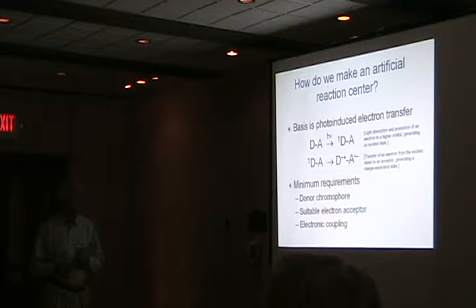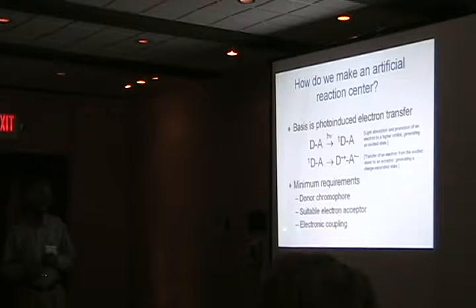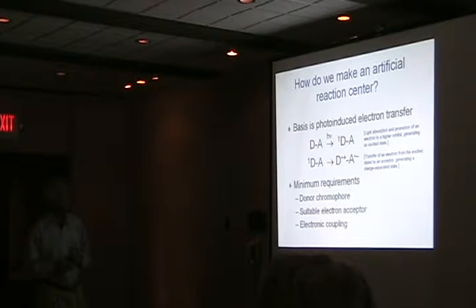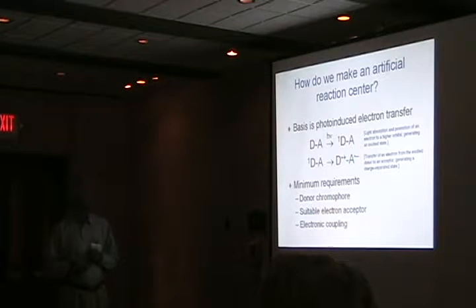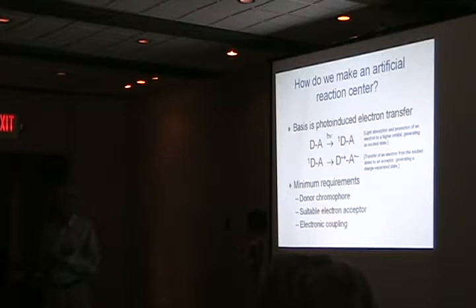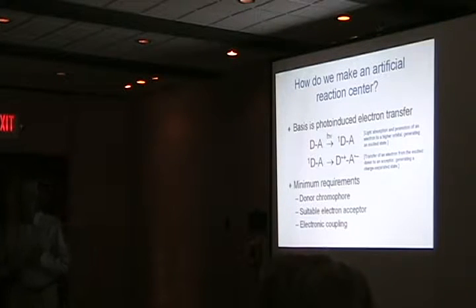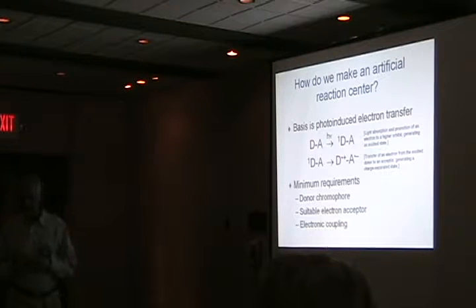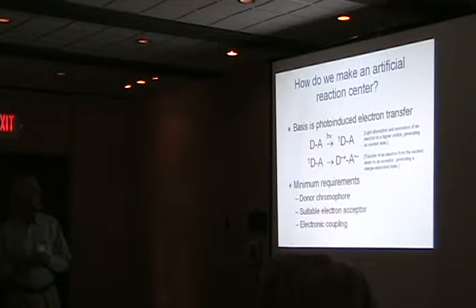The minimum requirements are going to be some kind of a donor, some kind of an acceptor, and we have to have electronic coupling between the donor and the acceptor that will let this process occur faster than decay of the excited state by other processes. Most of the molecules I'll talk about decay — the usual photo physics takes on the order of 1 to 10 nanoseconds — so we have to go much faster than that.